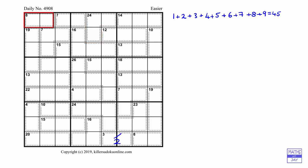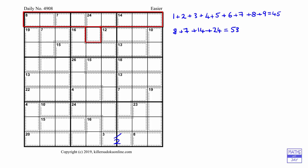If we add together 8, 7, 14, and 24 we get 53. We know that must equal 45 — the sum of all numbers in the top row — plus that one number in the second row. So we know that number in the middle of the second row must be 53 minus 45, which is 8. So that number goes in there.